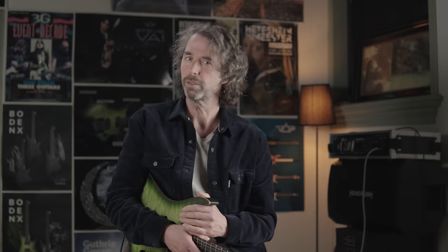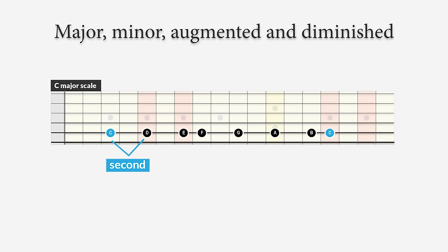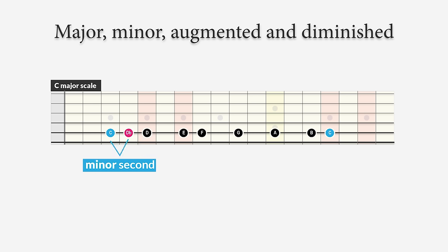Although the major scale is a seven-note scale, the octave consists of 12 half steps, so there are more than seven intervals. There's also a second between C and D-flat — it's still a second, but the distance is a half step, not a whole step as between C and D. This half-step interval we call a minor second. The interval between C and D is a whole step, and therefore we call it a major second.